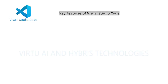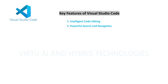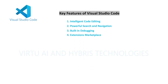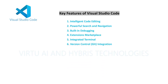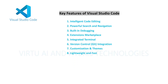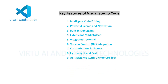The key features of VS Code include: integrated code editing, powerful search and navigation, built-in debugging, extensions marketplace, integrated terminal, version control and Git integration, customization and themes, lightweight and fast performance, AI assistant with GitHub Copilot, and remote development.